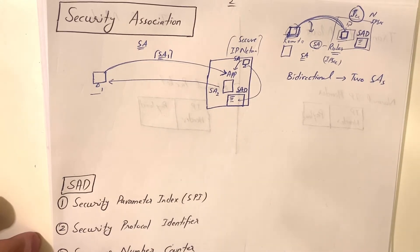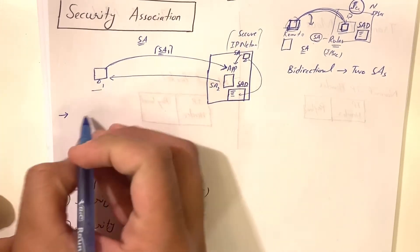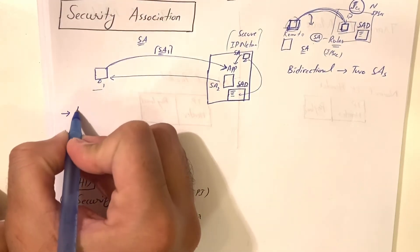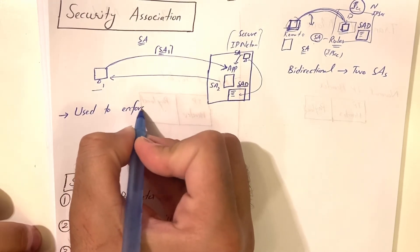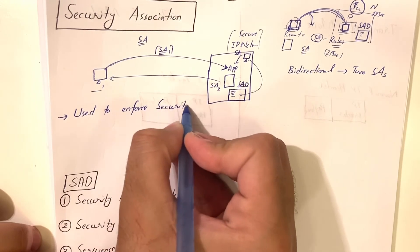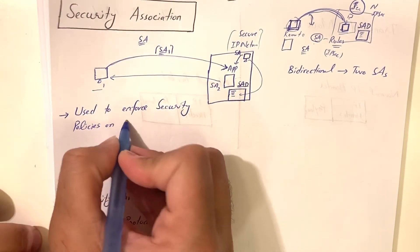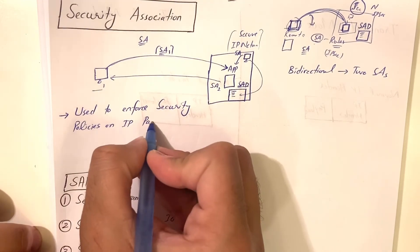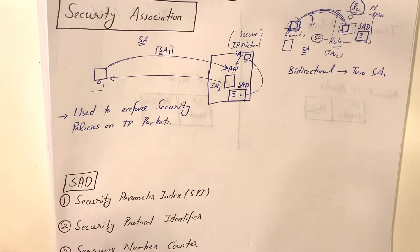Security associations are basically used to enforce security policies on IP packets. Everyone has to create a security association for communication.